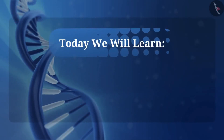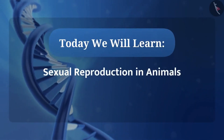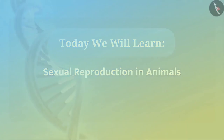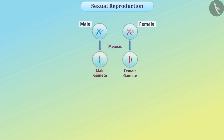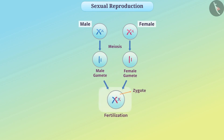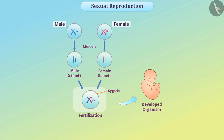We will learn about sexual reproduction in animals. We know that two parents participate in sexual reproduction. During sexual reproduction, the male germ cell is fused with the female germ cell to produce a zygote which develops into a new organism.